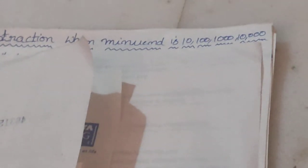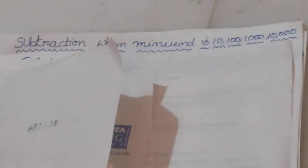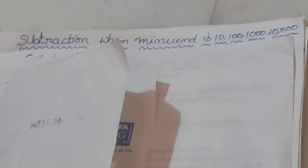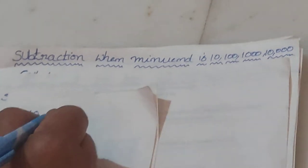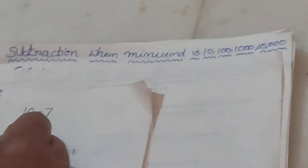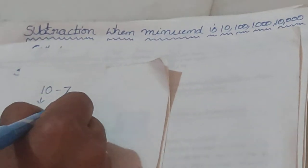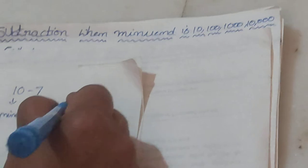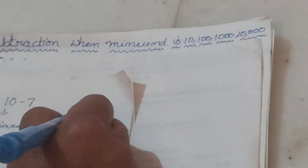Before getting into the lesson, let me explain which is the minuend and which is the subtrahend. Here is our Shri Khan. Can you tell me, in 10 minus 7, which is the minuend and which is the subtrahend? 10 is the minuend and 7 is the subtrahend. Yes, because we are subtracting 7 from 10, so 7 is the subtrahend and 10 is the minuend.